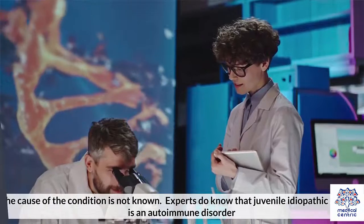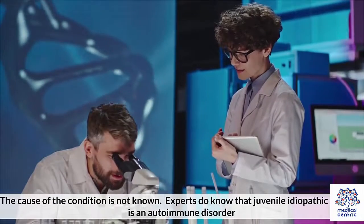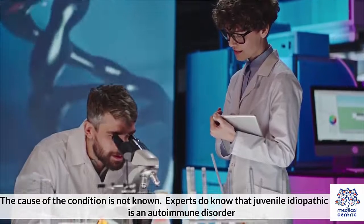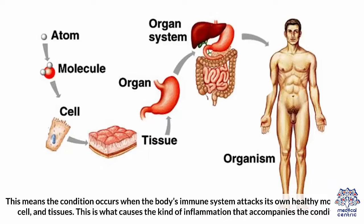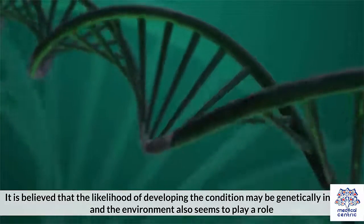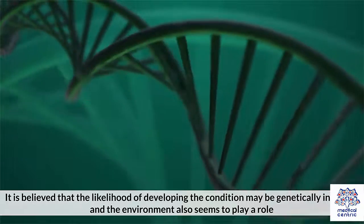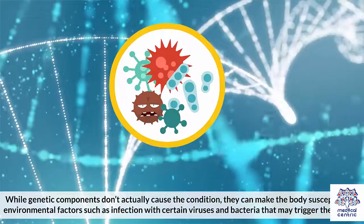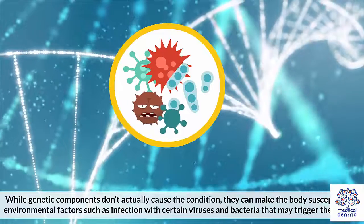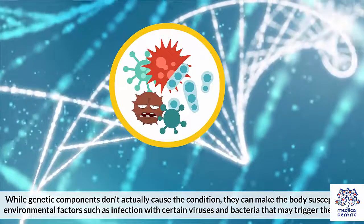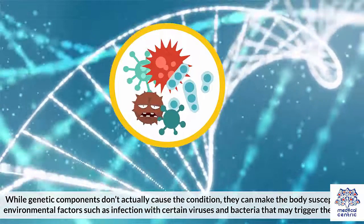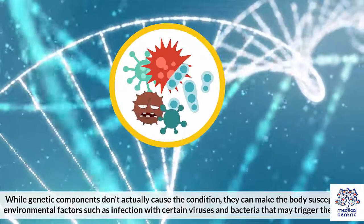The cause of the condition is not known. Experts do know that juvenile idiopathic arthritis is an autoimmune disorder, meaning the condition occurs when the body's immune system attacks its own healthy molecules, cells, and tissues. This is what causes the kind of inflammation that accompanies the condition. It is believed that the likelihood of developing the condition may be genetically inherited, and the environment also seems to play a role. While genetic components don't actually cause the condition, they can make the body susceptible to environmental factors, such as infection with certain viruses and bacteria that may trigger the disease.